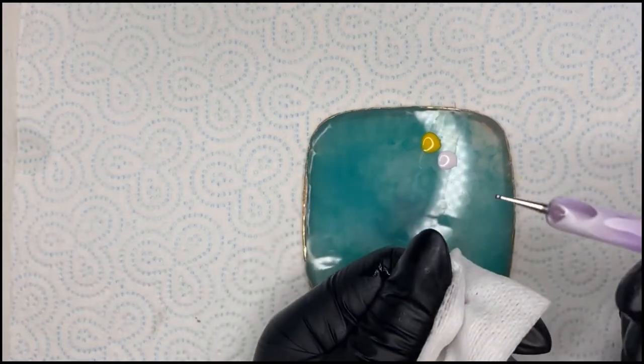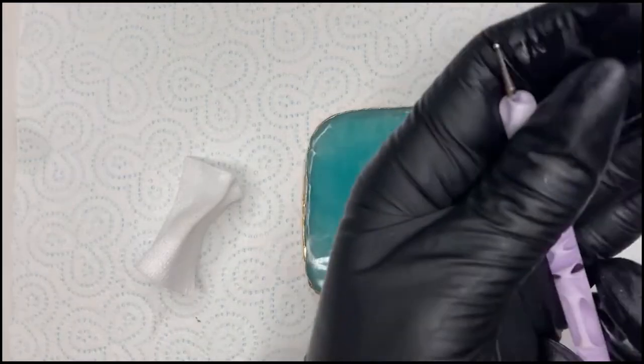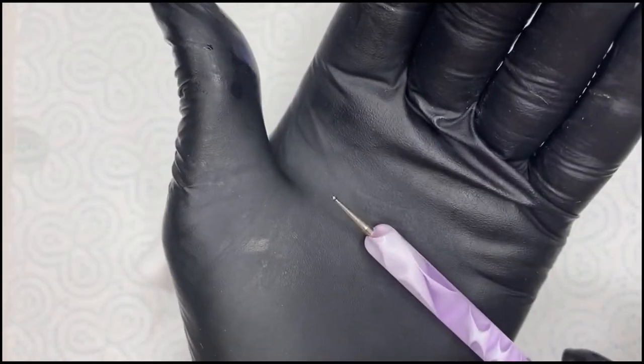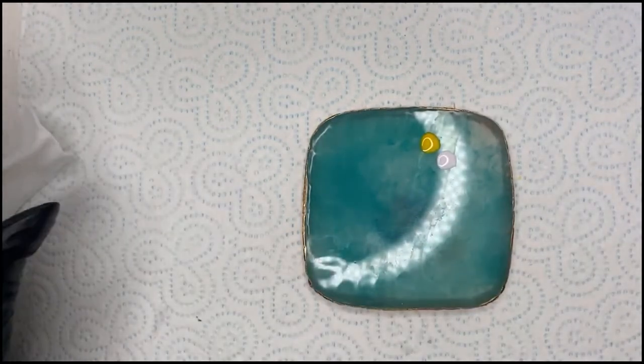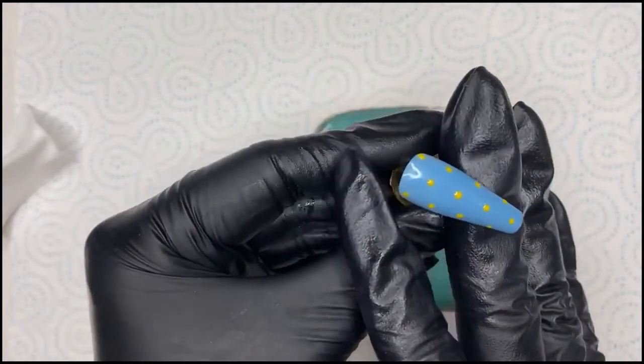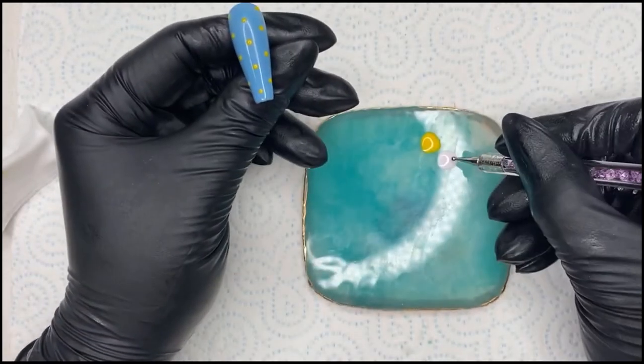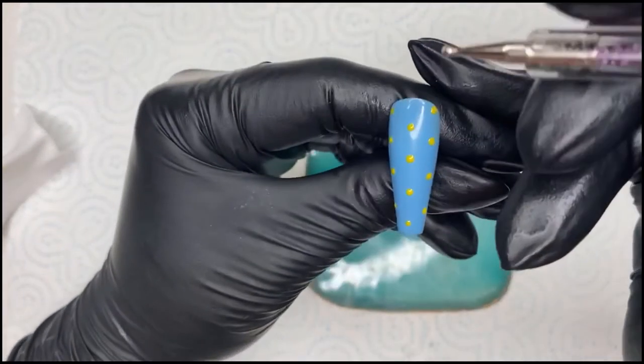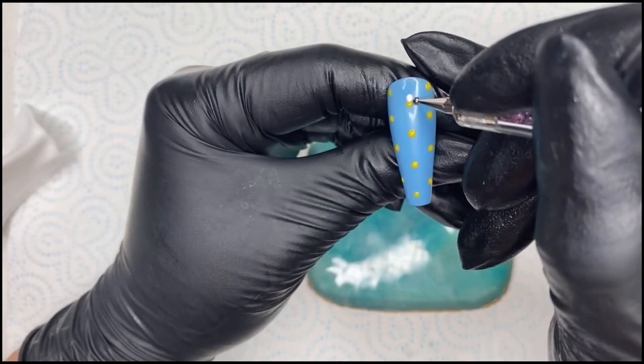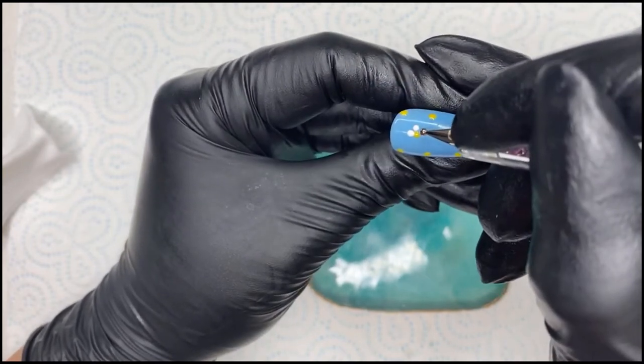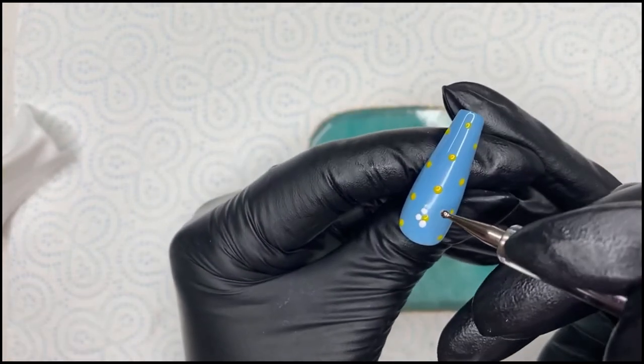I'm just wiping off my dotting tool and I think I'm probably going to use a bigger one. I used a slightly smaller one for the middle, and I'm going to use a slightly bigger one for the white petals. You don't need to wipe this off because obviously you've only flash cured it. I'm just going to pick up some of my white and then place it on my daisies. It's literally just about doing little dots around your yellow dot.